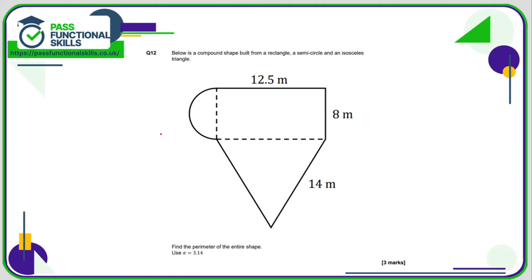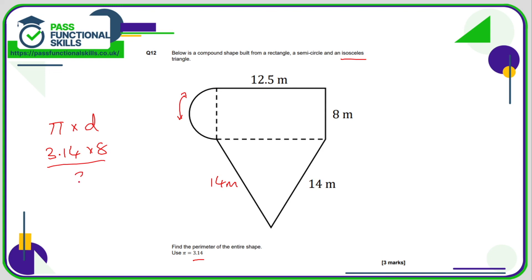Question 12: the compound shape has two unknown sides. It's an isosceles triangle, so this side is also 14 metres. There's also a semicircle. The circumference formula is pi times the diameter; pi is 3.14 and the diameter is 8. For the semicircle, divide by 2: 3.14 times 8 divided by 2 is 12.56 metres. Now add 12.56, 14, and 14, giving a grand total of 61.06 metres.